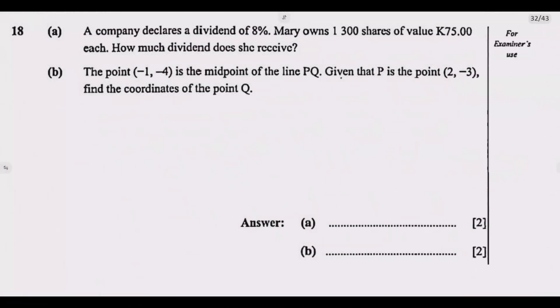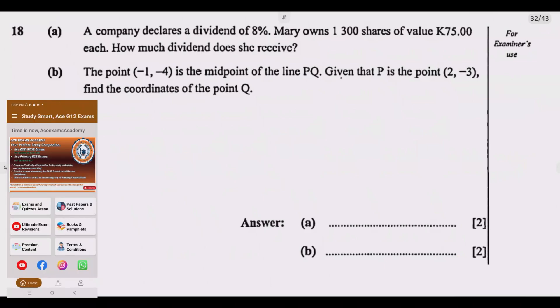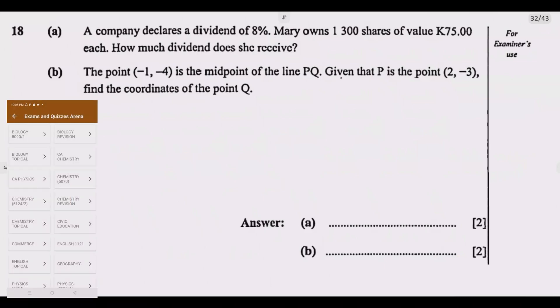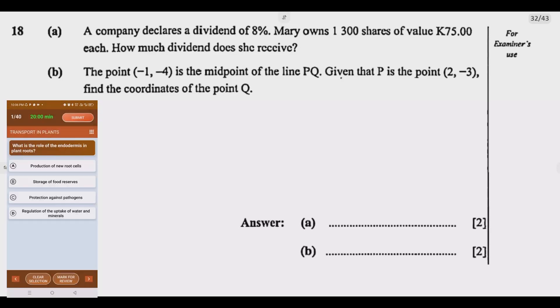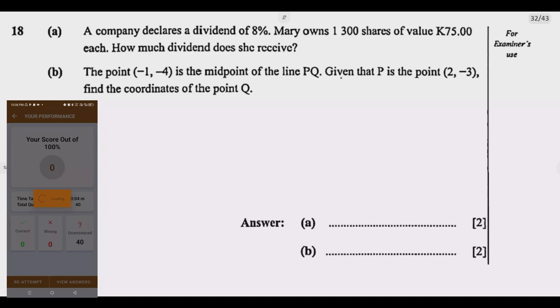Question 18, Part A: A company declares a dividend of 8%. Mary owns 1,300 shares of value 75 kwacha each. How much dividend does she receive?